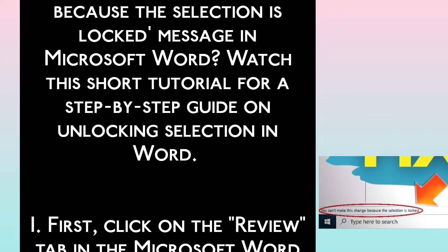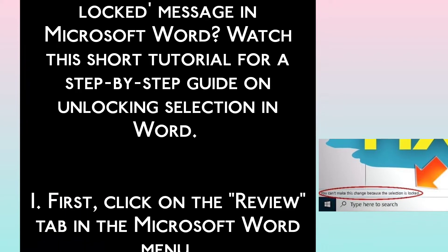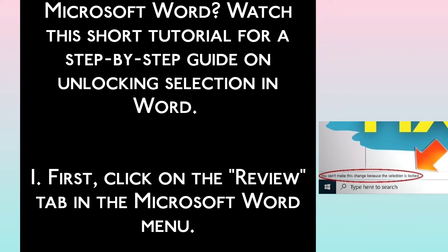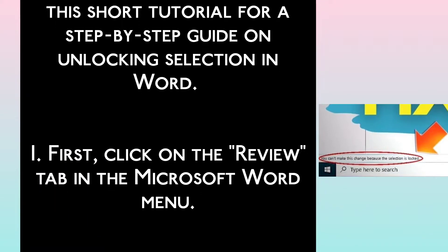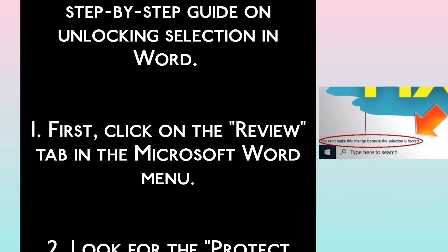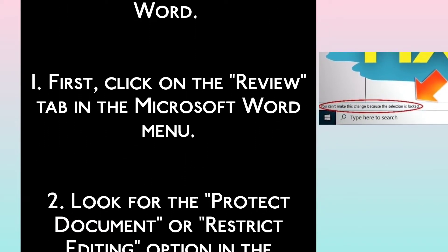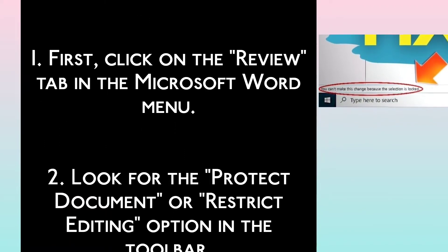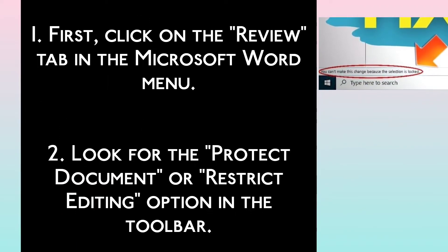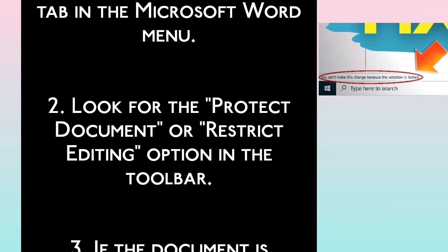Step 1: Click on the Review tab in the Microsoft Word menu. Step 2: Look for the Protect Document or Restrict Editing option in the toolbar.